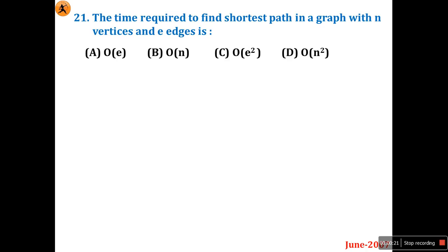Question 21 asks about the time required to find a shortest path in a graph with N vertices and E edges. The four options given are O(E), O(N), O(E²), and O(N²), where N is the number of vertices and E is the number of edges.